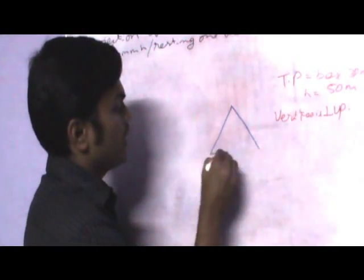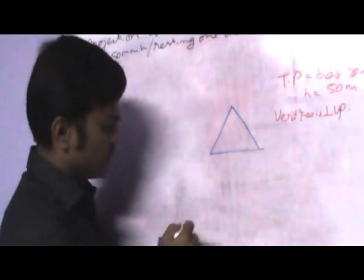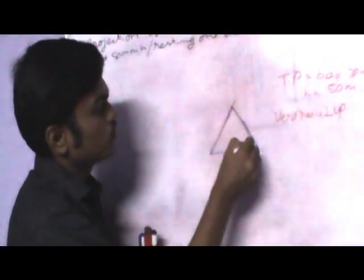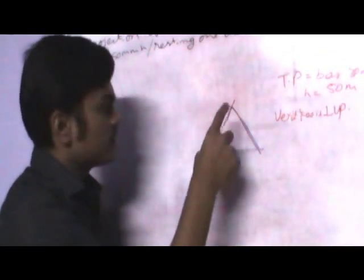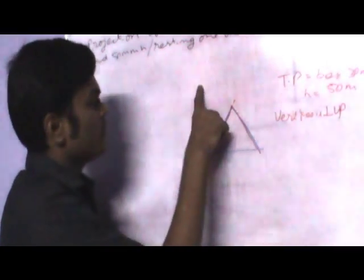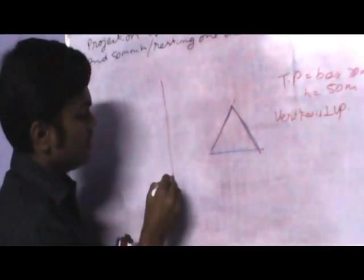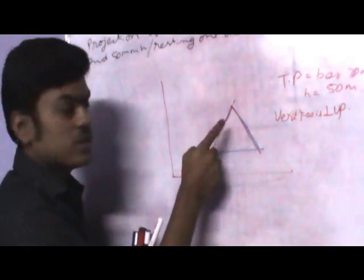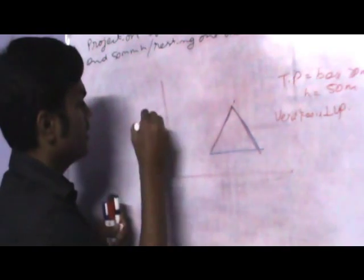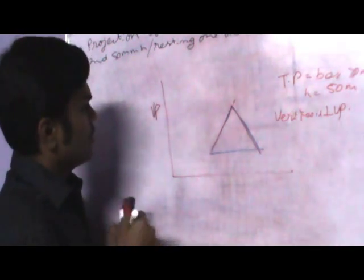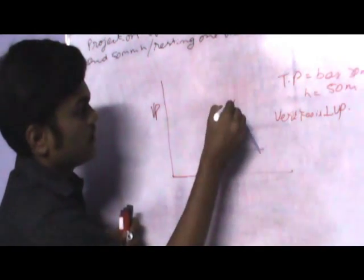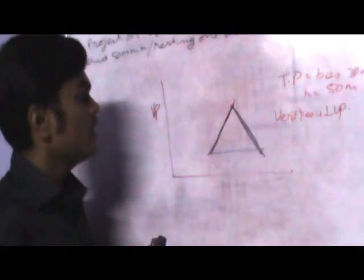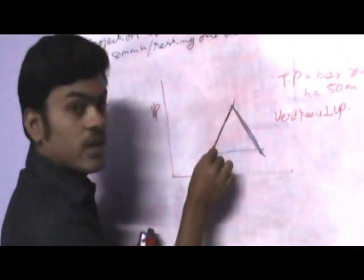Let me explain what the vertical face of the triangle is. These two are the vertical faces of the triangle. What they are saying is this face should be perpendicular to VP. VP is the vertical plane and this is the horizontal plane. Now, this vertical face is parallel to VP — this is the VP line.